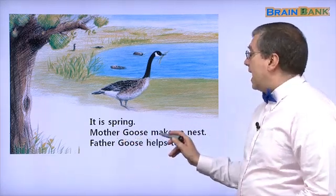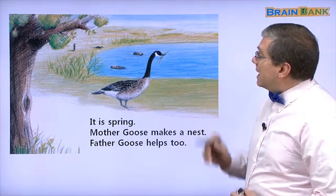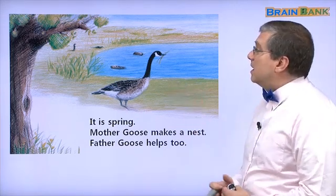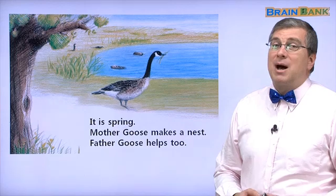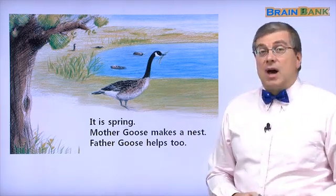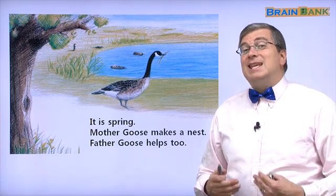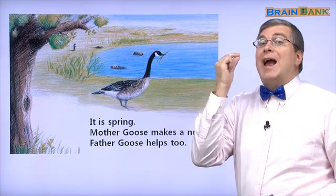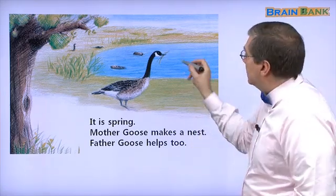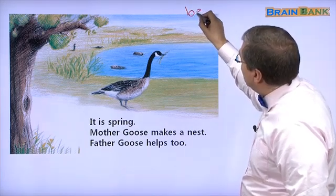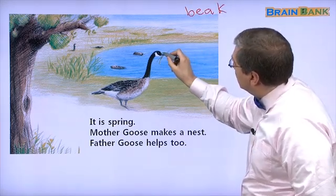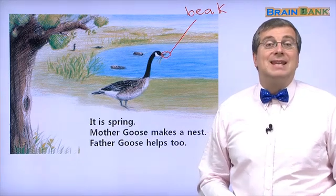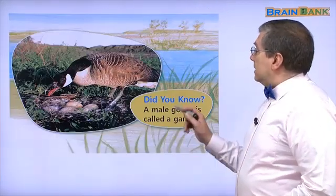Mother Goose makes a nest. Father Goose helps too. So in the picture, what do we see? Who is that? That looks like Father Goose — 'appa appa koi,' right? What is Father Goose doing? He's helping to make a nest. He has some grass in his beak — B-E-A-K — this is his beak. So he helps to make the nest.